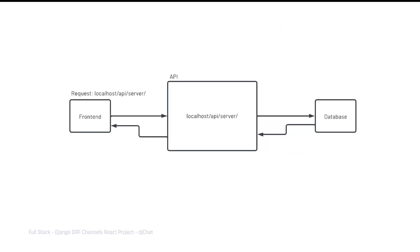Now we're going to build an API endpoint, which is a specific URL or web address where a user or front-end application can access a set of resources or functionality provided by our web application — our API service. In our scenario, we have a front-end React application that will send a request to, for example, a localhost API server. That resource is identified by the API, potentially accessing data in the database, and then that data is returned back to the front end.